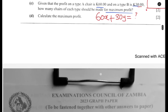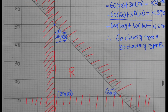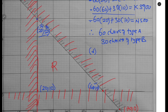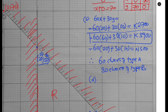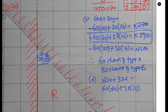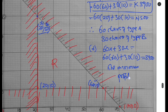Question D: calculate the maximum profit. We pick the point that gave the highest value — (60, 10). Using the objective function: 60×60 + 30×10 = 3,600 + 300 = 3,900. So the maximum profit is 3,900 kwacha.